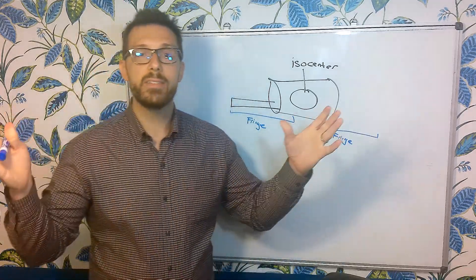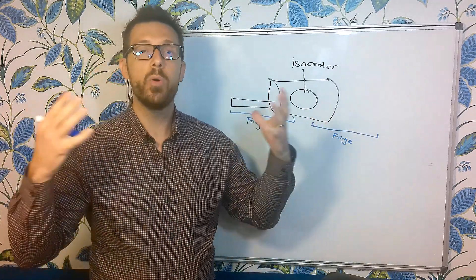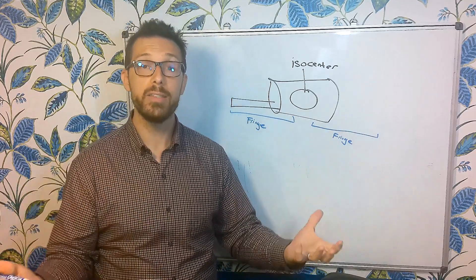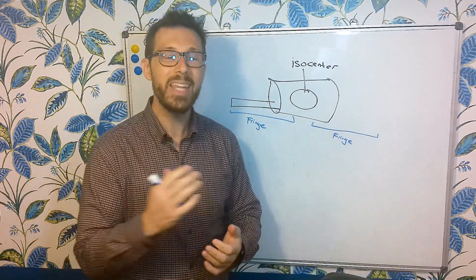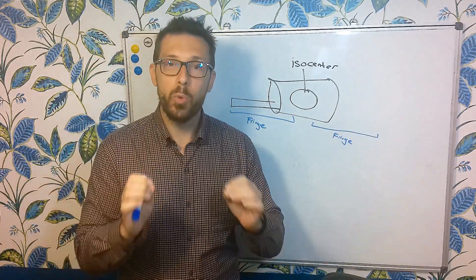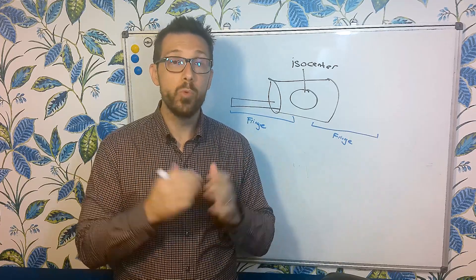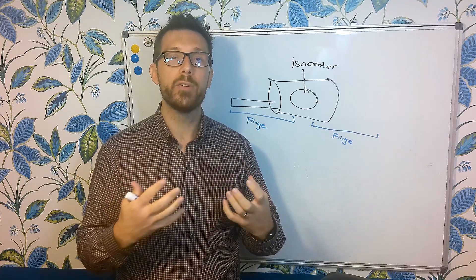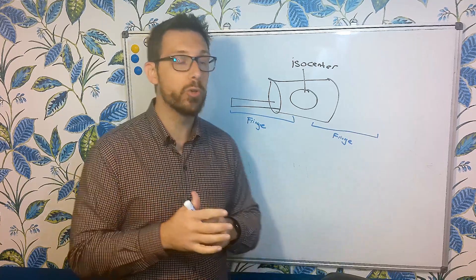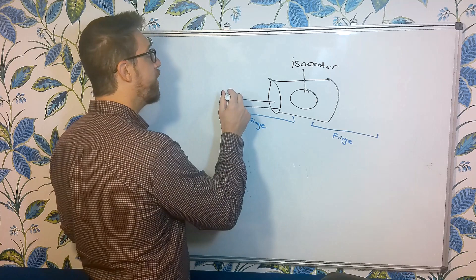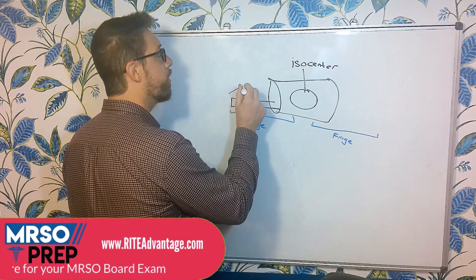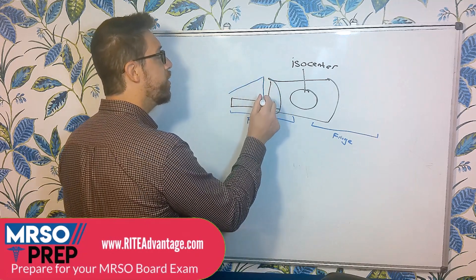So it's this magnetic field that is only a threat to us and our patient. Now, I don't like the word fringe field because it doesn't really describe truly what the threat is. Really, what is happening here is we have this magnetic spatial gradient or this magnetic field that actually gets stronger the closer we get to this magnet.